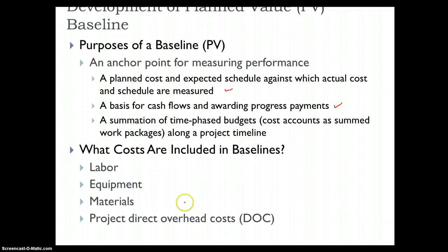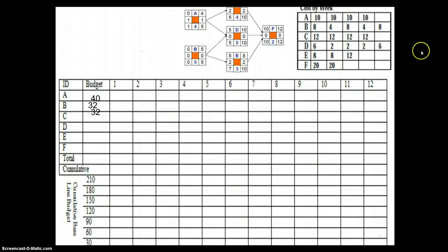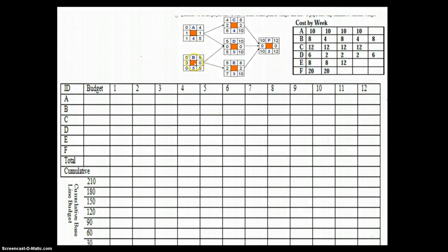And project direct overhead costs. So in this example we will see how do we go about drawing a planned value line. So the very first step is to complete the forward pass and the backward pass calculations.